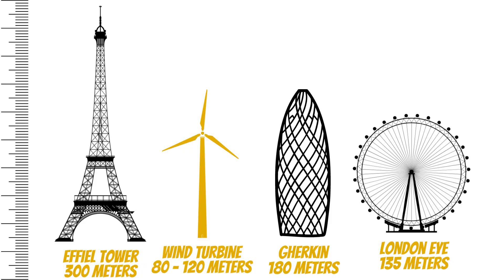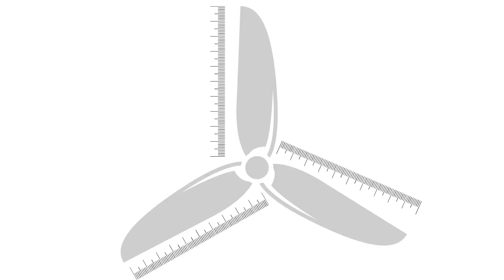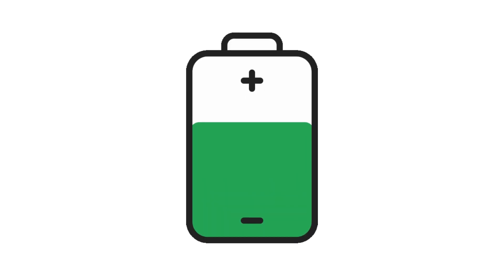We've learned how wind is formed and how kinetic energy is used. Now let's learn how wind turbines work. Wind turbines usually stand around 80 to 120 meters high. Over the years, increasing turbine heights and blade lengths have resulted in them being more efficient in capturing more energy.